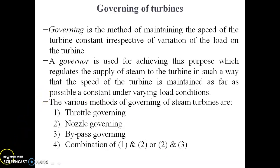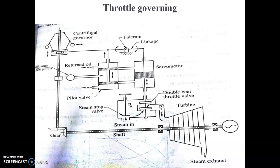The first method is throttle governing. The objective of throttle governing is to throttle the steam to a suitable pressure and allow the required quantity of steam to flow through the turbine according to the load, thereby maintaining a constant speed for the turbine.